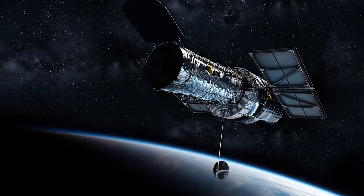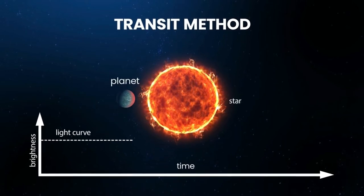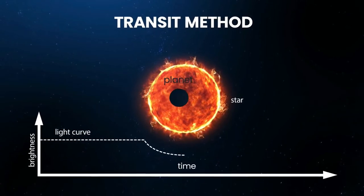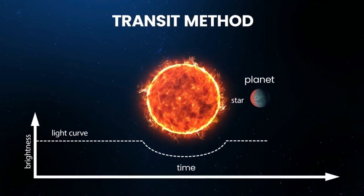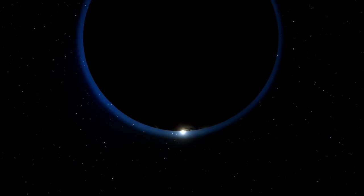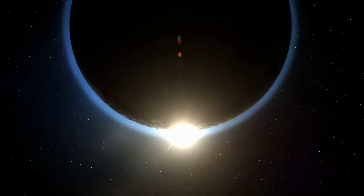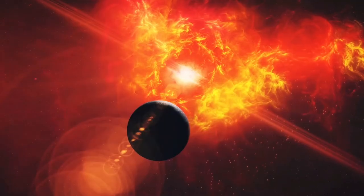Kepler mainly used what's known as the transit method for exoplanet hunting. It essentially means that if a planet passes in front of a star, the light from the star dims slightly, and that's how we can tell that there's a planet there. The level of dimming and how long it lasts gives us important information about the size and orbit of the planet.